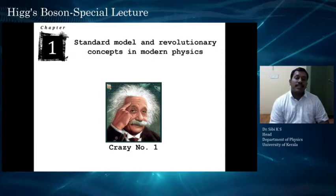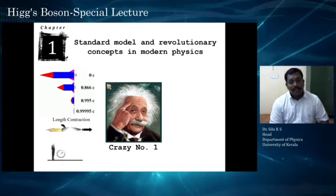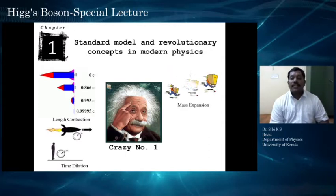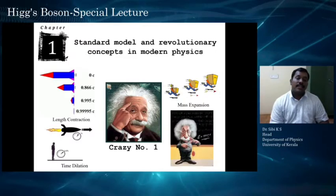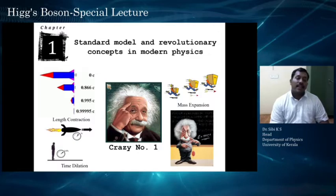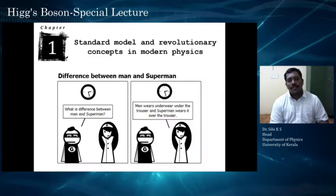One of the craziest persons who put forward these ideas is Albert Einstein. He put forward the concept of length contraction and time dilation, and he is also the person who thought about mass expansion — all showing that space, time, and mass are relative concepts. Thanks to Albert Einstein's E equals mc² — the revolutionary equation that changed our perspective on matter, showing that matter can change into radiation and energy. He should be considered the craziest person who put forward all these revolutionary concepts in modern physics.